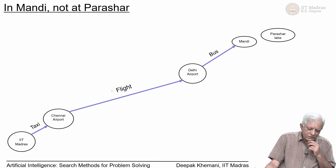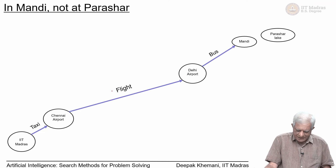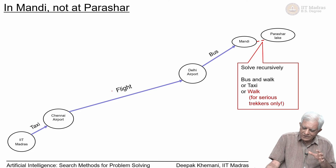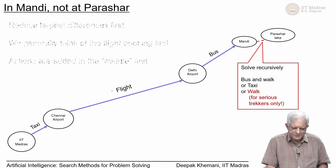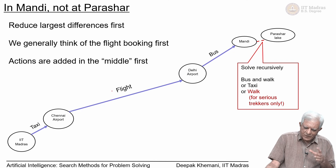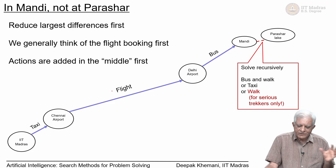Your solution might be: take a taxi from IIT Madras to Chennai airport, take a flight to Delhi, then take a bus from Delhi airport to Mandi. You are still left with the difference of getting from Mandi to Parashar Lake — you can take a bus and then walk, take a taxi all the way, or walk from Mandi. This is the general strategy of means-ends analysis: reduce the largest differences first. Crucially, we have selected an action that happens in the middle of the plan first — other algorithms do not really allow us to do that.